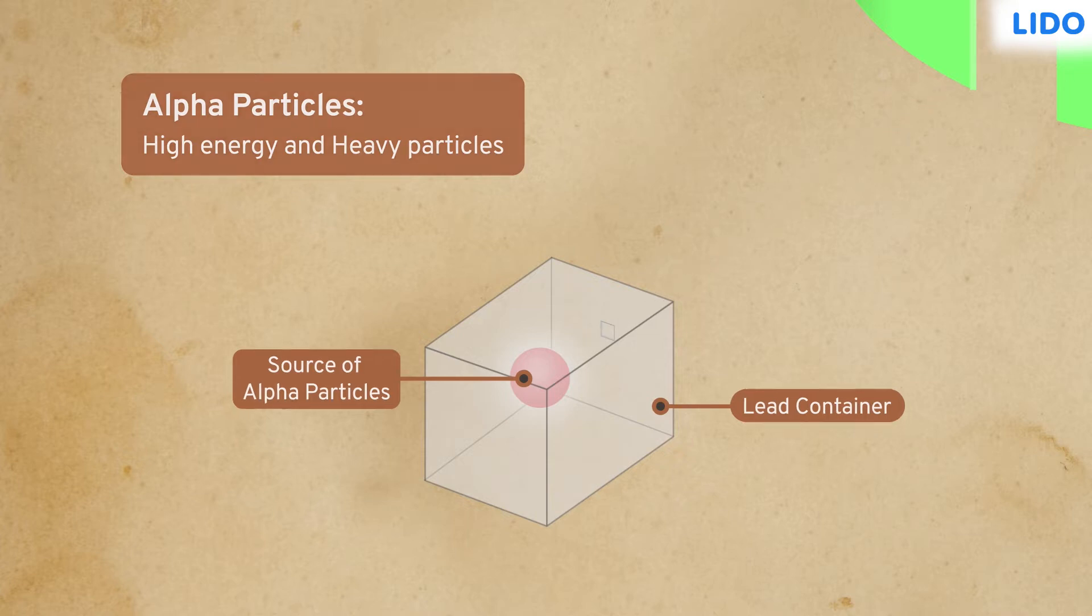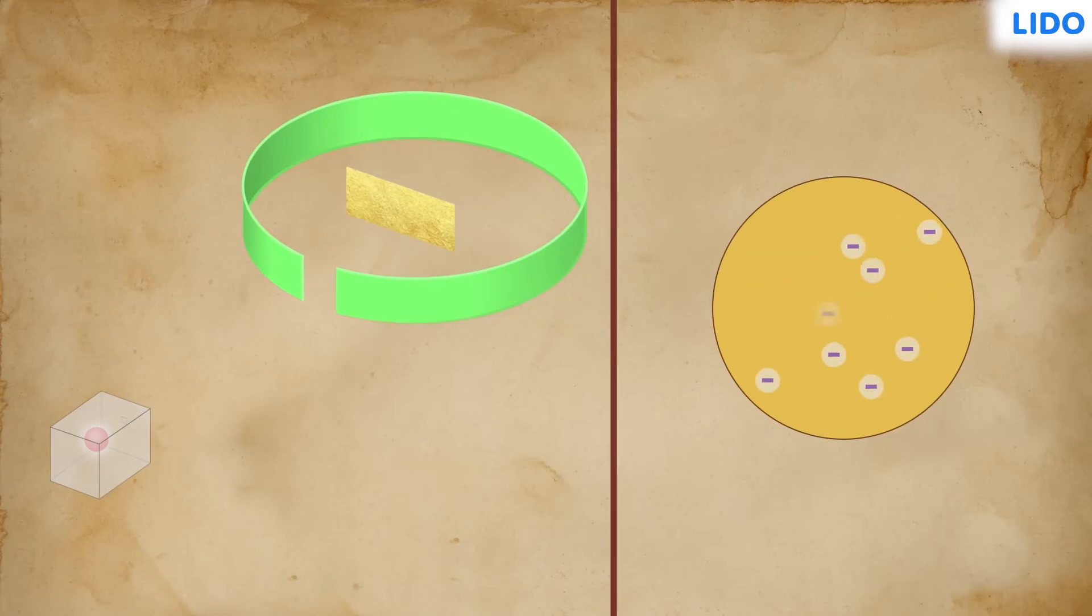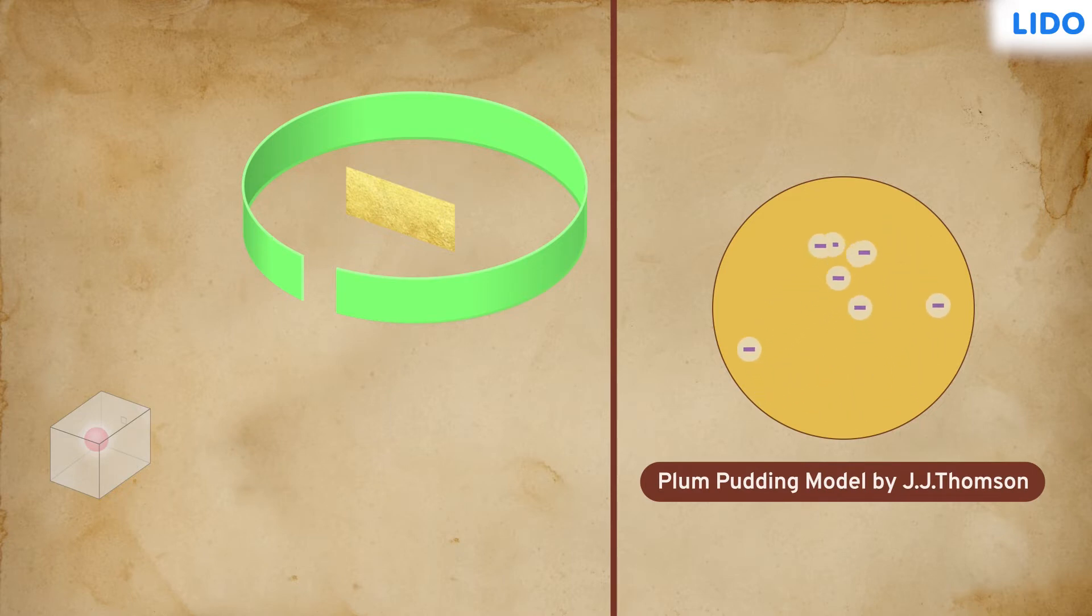Since an atom consists of lightweight subatomic particles arranged in a plum pudding structure as suggested by J.J. Thompson, Rutherford assumed that the heavy alpha particles would easily pierce through it, pushing the light particles away and hit the screen without any change in directions.